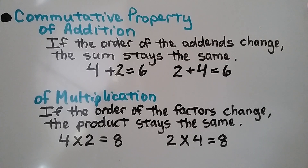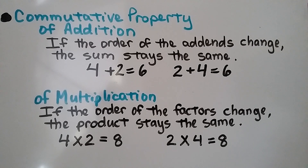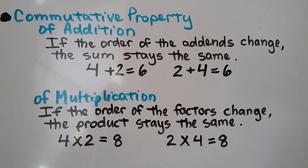The sum stayed the same. The commutative property of multiplication says if the order of the factors change, the product stays the same. So our factors are 4 and 2. We do 4 times 2 — that's equal to 8. We can change the order of the factors to 2 times 4 and it still equals 8. The product stays the same.